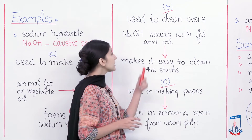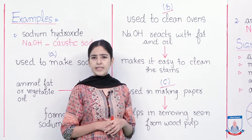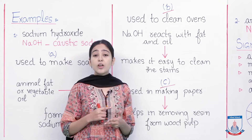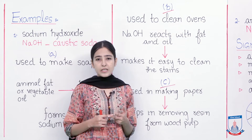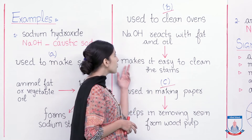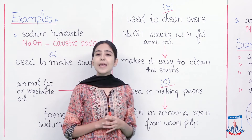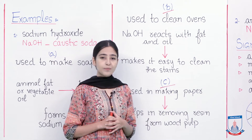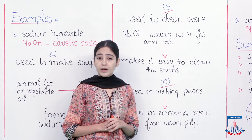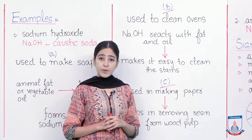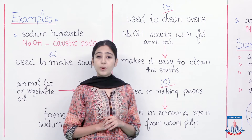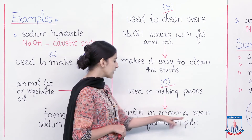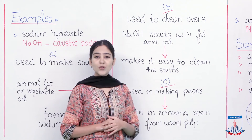The second use of NaOH is that it is used to clean ovens. The stains found on ovens are typically from food like fat and oil. Since sodium hydroxide reacts with fat and oil, it makes it easy to remove these stains with less effort and time. The third use is in the manufacture of paper — an important step is the removal of resin from wood pulp, and NaOH helps in that removal.